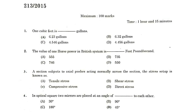1 cubic feet is equal to 6.23 gallons. The value of 1 horsepower in the British system is 550 foot pound per second.